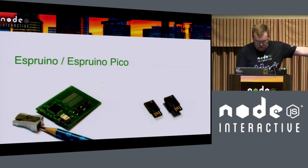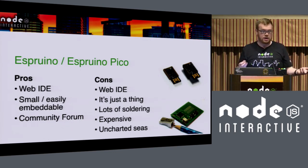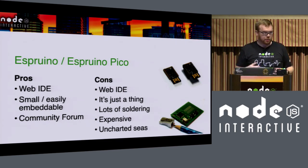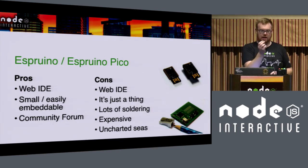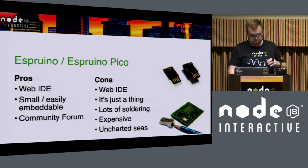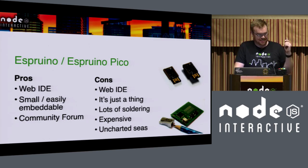The bigger board is $40, and the Pico is $25, so we're getting a little cheaper. The pros of the Espruino Pico are that anyone with any device that can run the Chrome web browser can program it — if you've got a Chromebook, you can install the plugin for the Web IDE. It's got Blockly support for people not familiar with JavaScript or programming in general. It's small and easily embeddable, you can plug it into your iPhone charger. And the community forum is awesome — when I was building my project I reached out, had an answer within 20 minutes, and built my project within a couple of days.